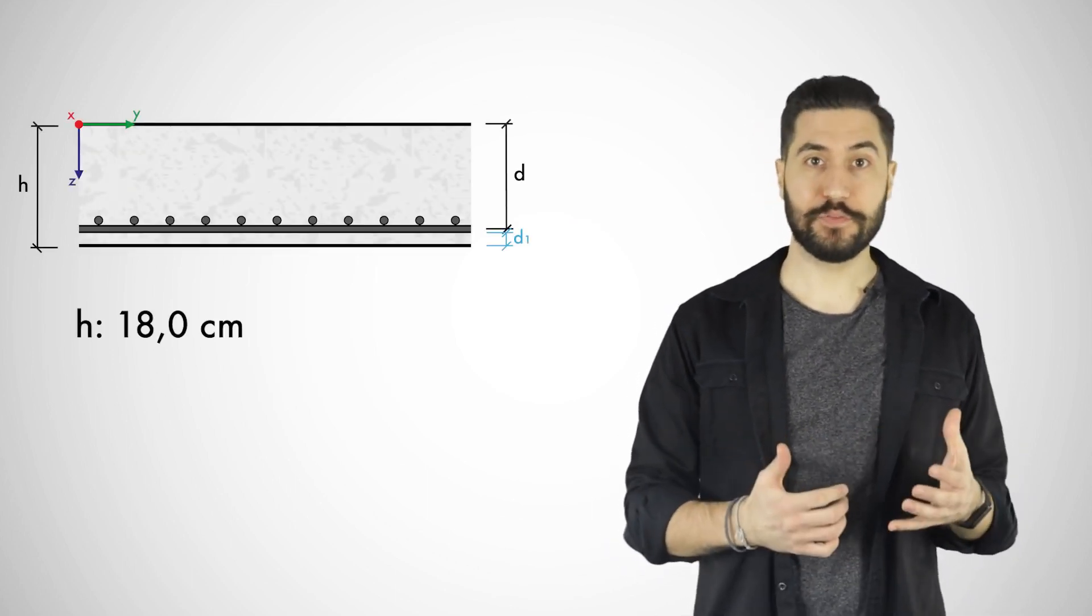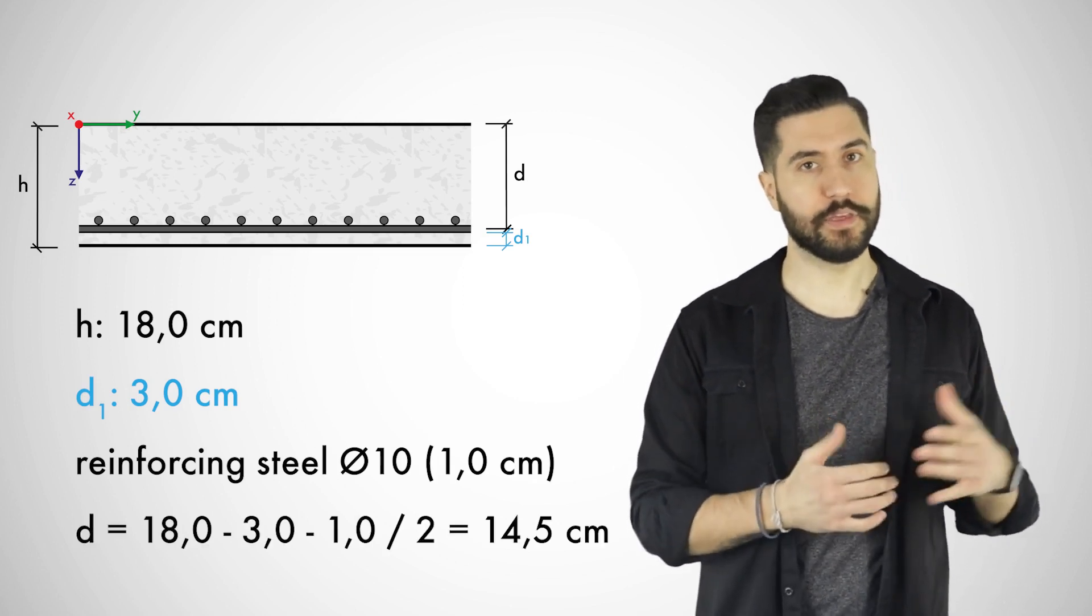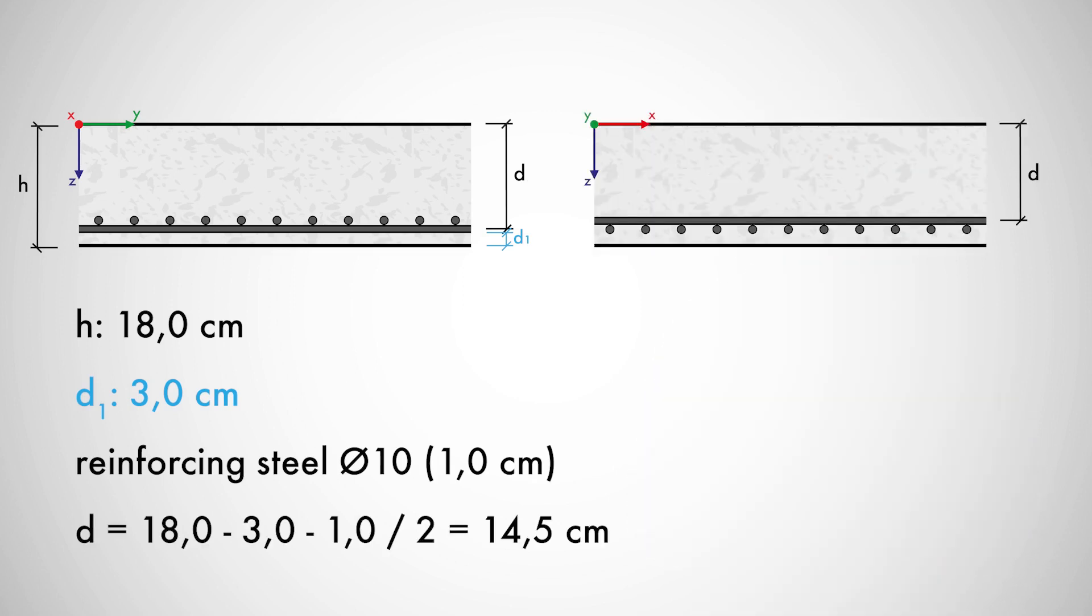Let's look at a few examples. In the case of slabs you have to pay attention to the directions of the reinforcements because one layer is always higher than the other. Thus, there are different effective depths in the x and y directions.